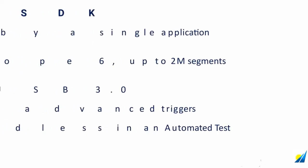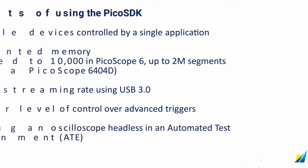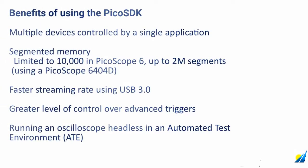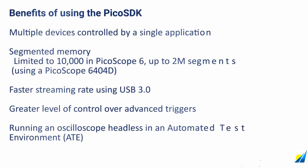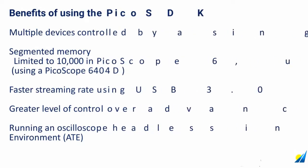Here are five benefits of using the Pico SDK: multiple devices controlled by a single application; the ability to segment the memory for up to 2 million segments depending upon the device; potentially faster streaming rates on USB 3; a greater level of control over advanced triggers; and the ability to run an oscilloscope headless in an automated test environment.